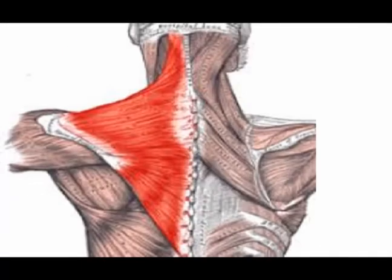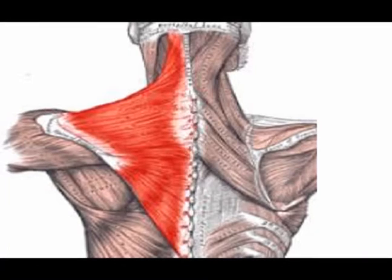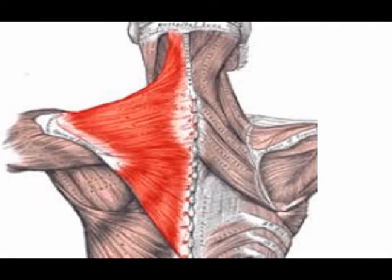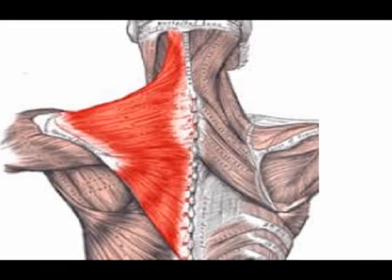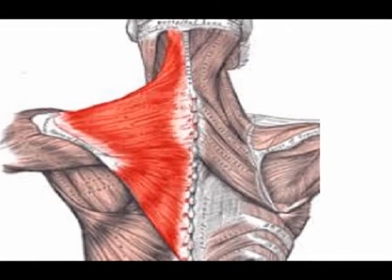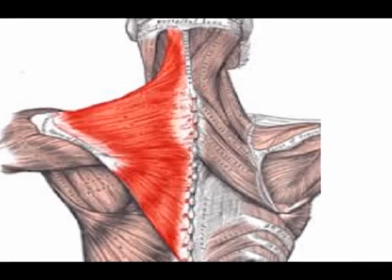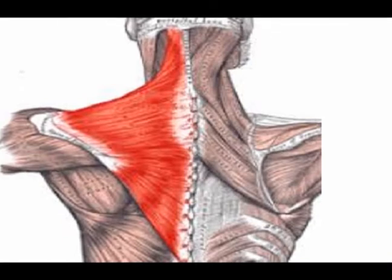The insertion of the upper part of the trapezius muscle is the lateral third of the clavicle and the medial aspect of the acromion process. The insertion of the middle part is the medial aspect of the superior surface of the acromion process and the superior aspect of the scapular spine.